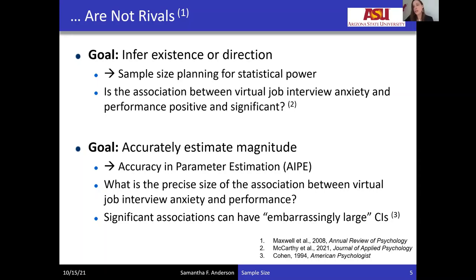We can certainly find statistically significant regression coefficients that still unfortunately have what are called embarrassingly large confidence intervals. Importantly, we can often have goals that consider both power and accuracy, and we can do our sample size planning considering both of these goals even within the context of a single study.